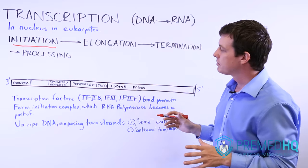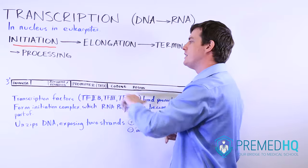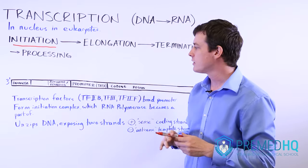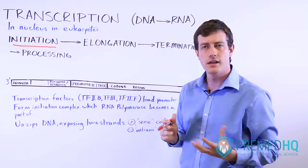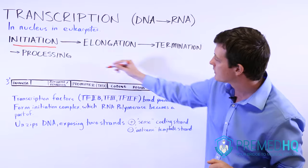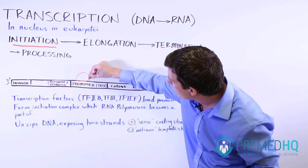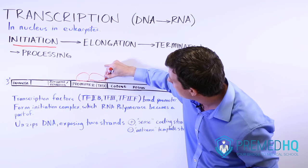What happens at the promoter is that it's a DNA sequence that can be recognized by transcription factors. Transcription factors are just proteins that bind specific sequences on the DNA. So you'll have a few transcription factors show up here and they'll bind to this sequence like that.